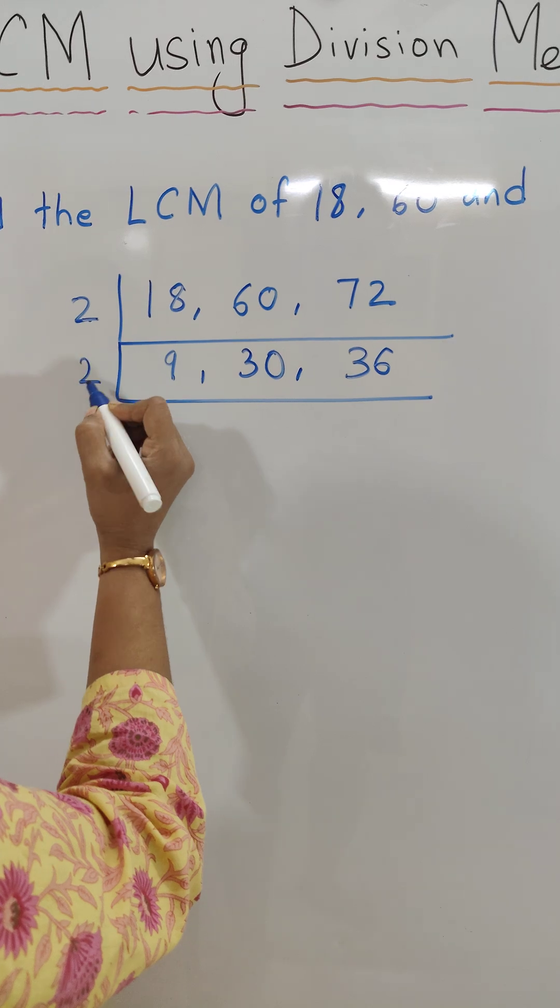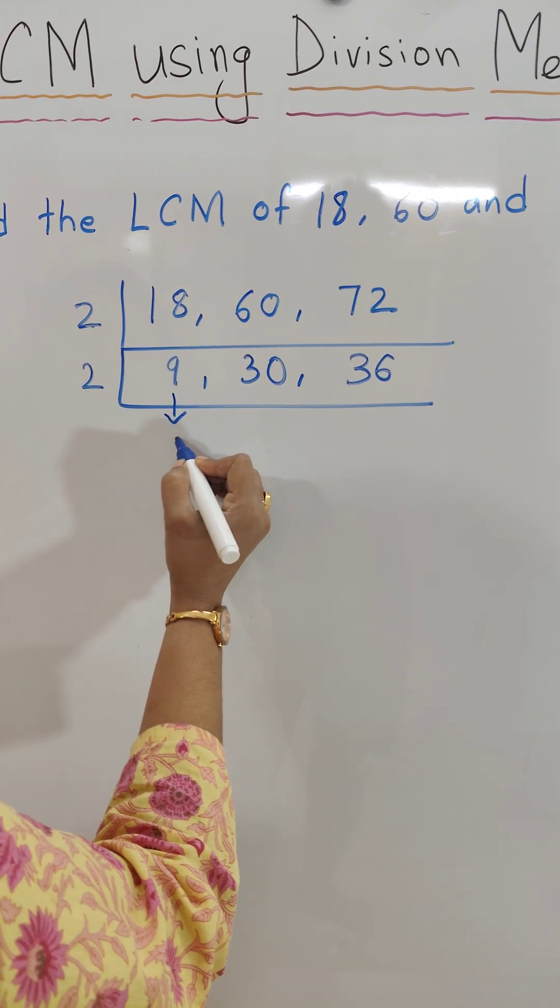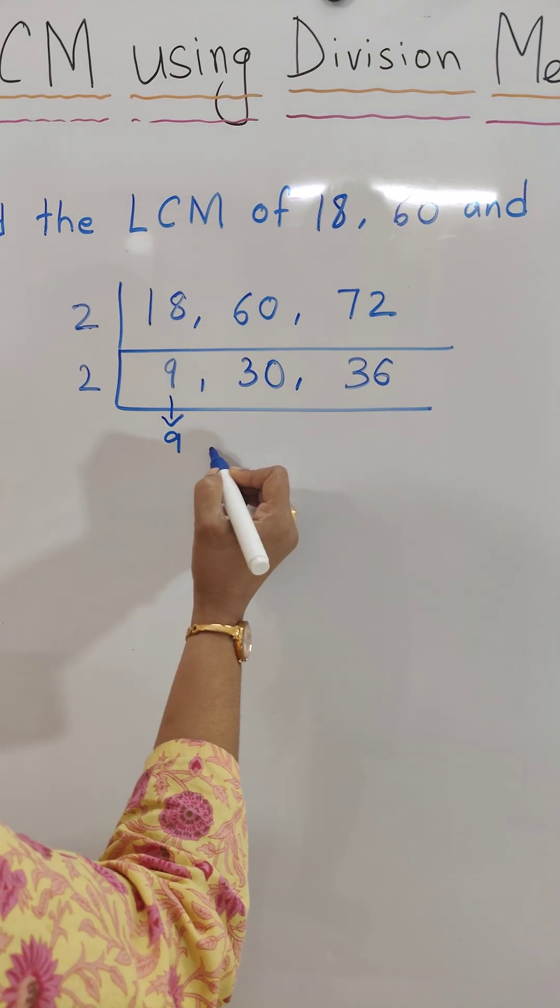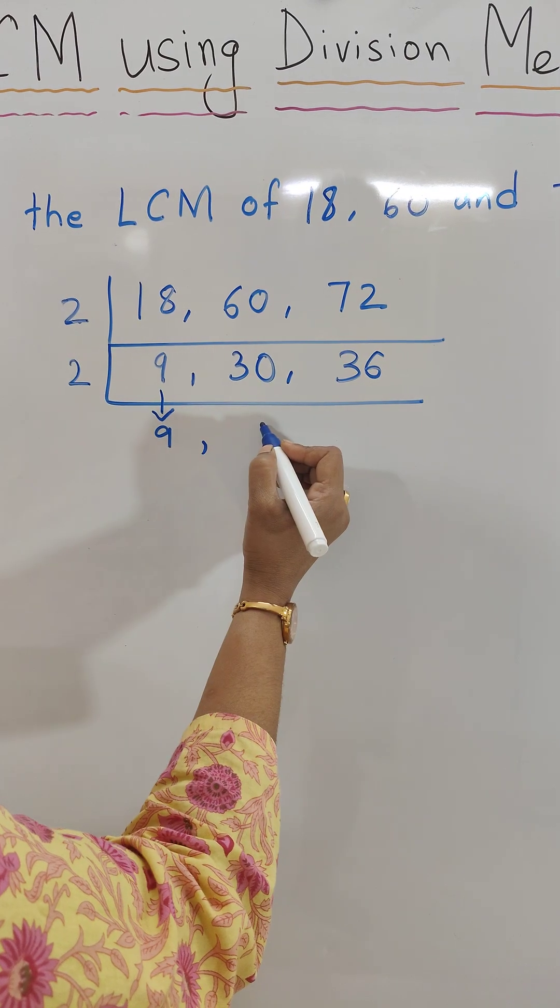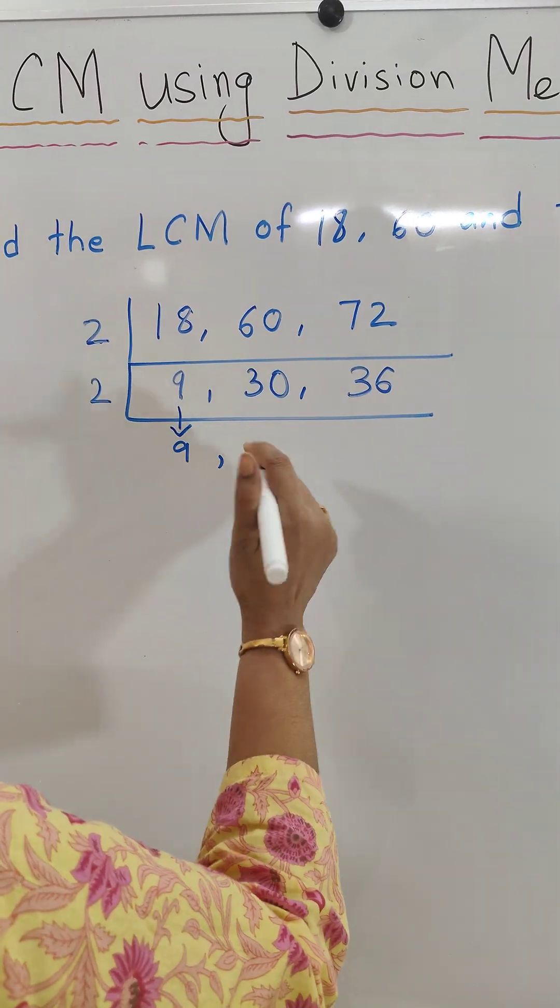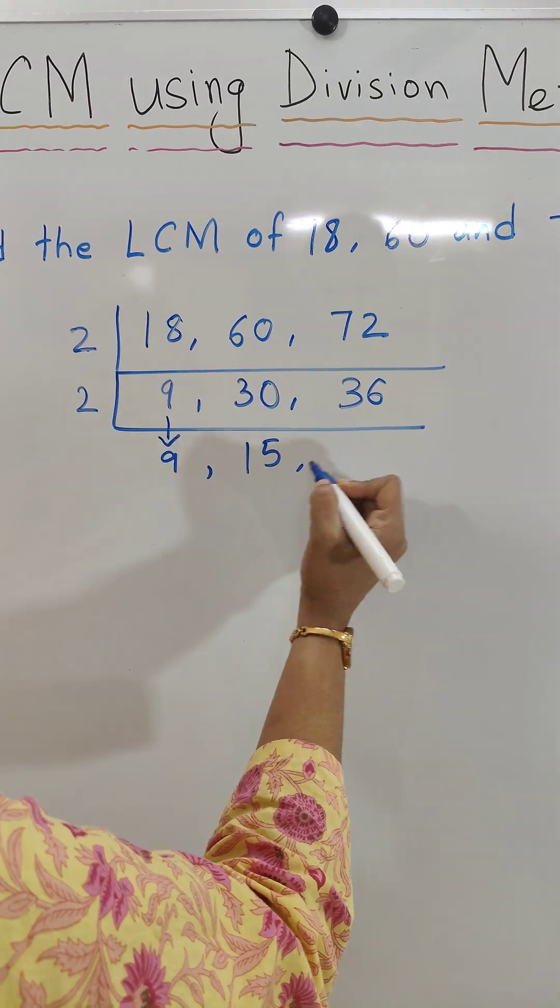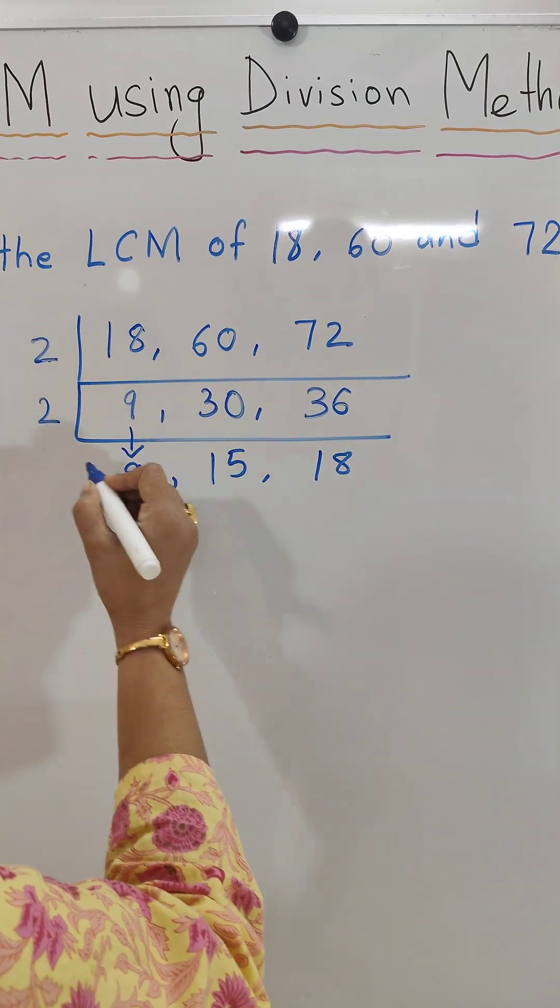Let's again take the prime number 2. 9 will come down because we can't exactly divide 9 by 2. 30 divided by 2 is 15, 36 divided by 2 is 18.